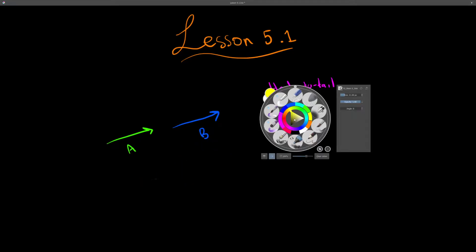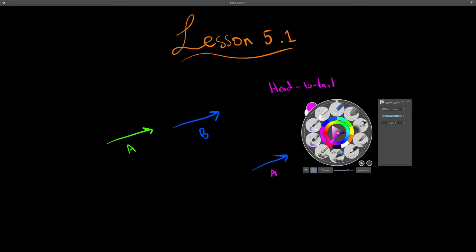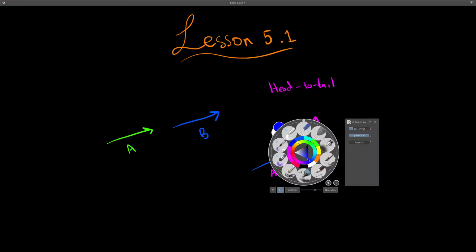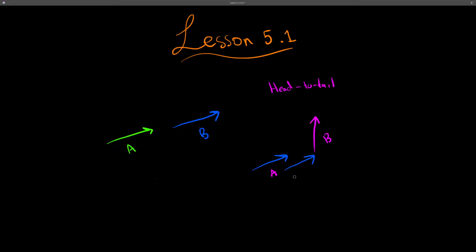Now if the vectors weren't parallel — so you have two vectors, vector A and vector B at an angle — how would you add them? It's the same exact way: we use the head-to-tail method, and we make sure that the new vector we draw is parallel to the original one. So this is vector A, this is vector B, and this is our new resultant vector.